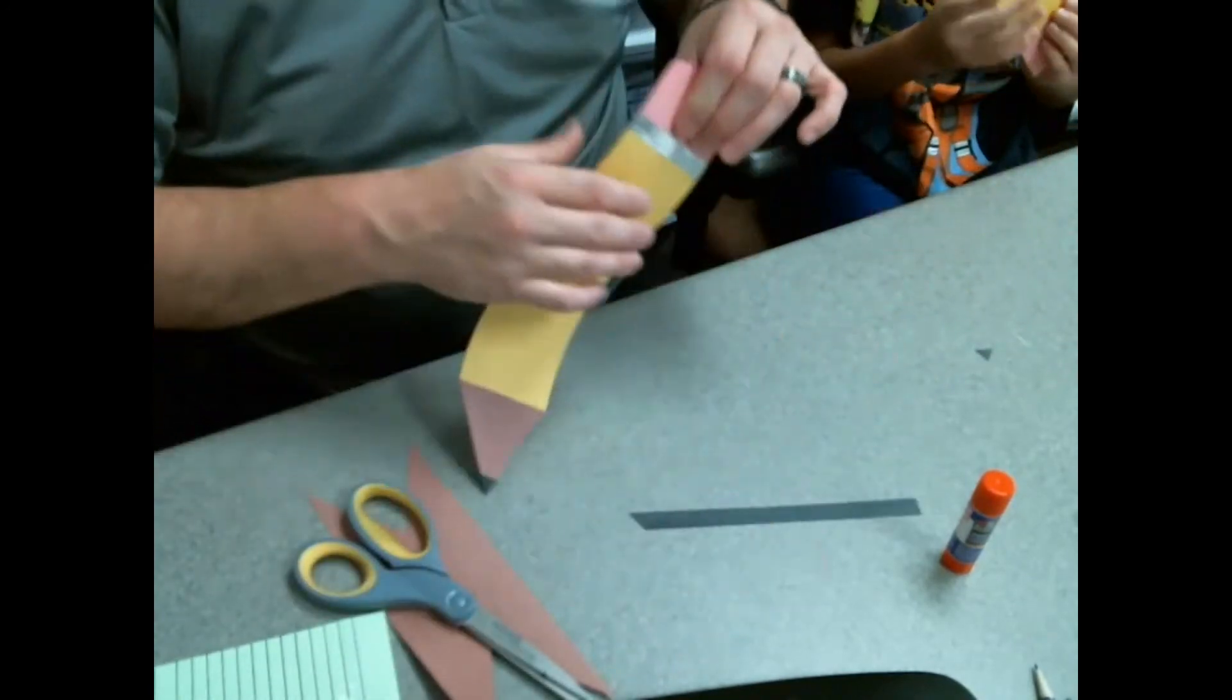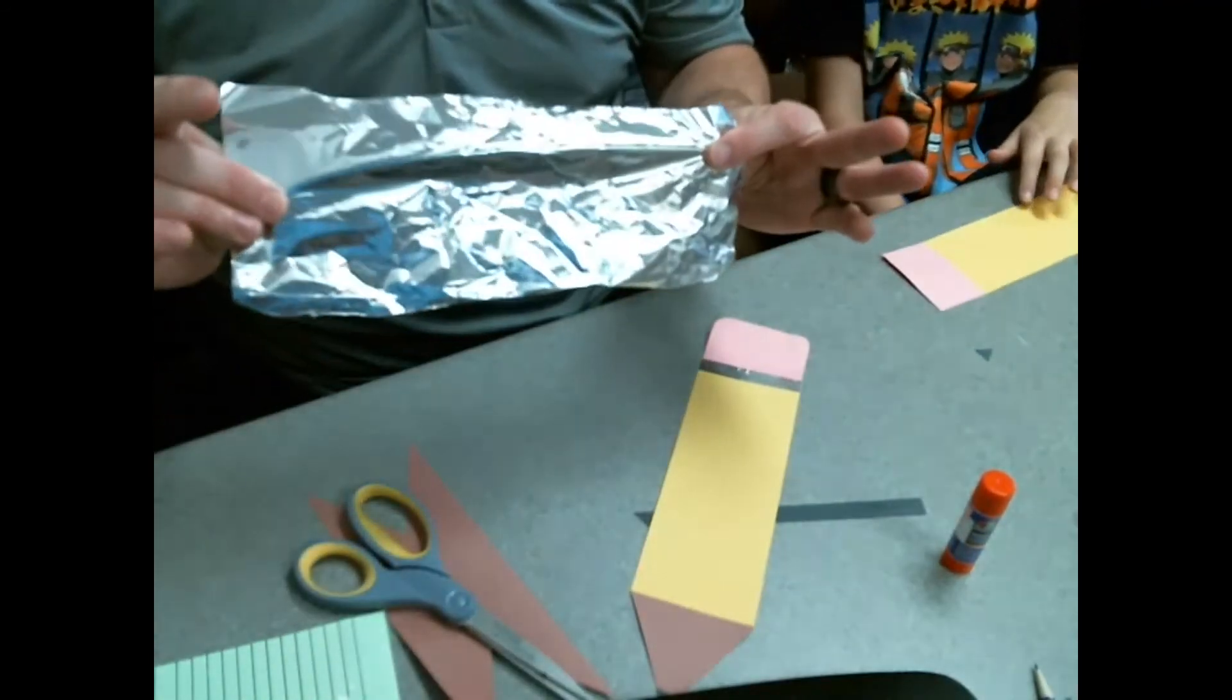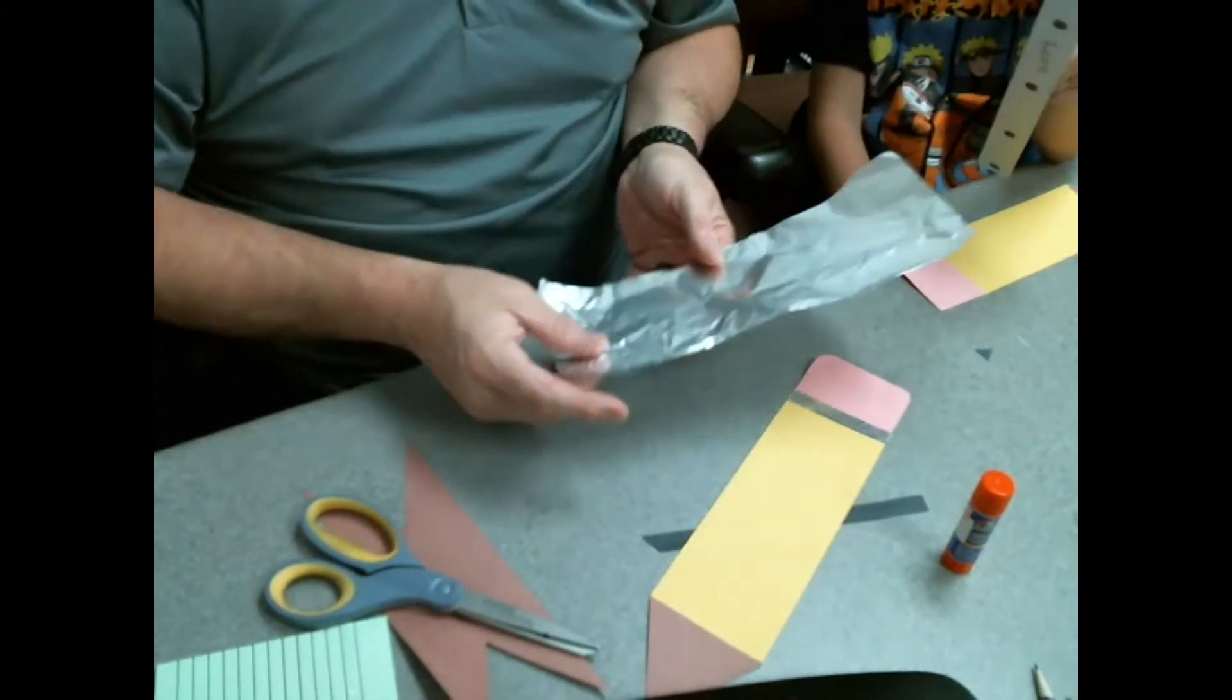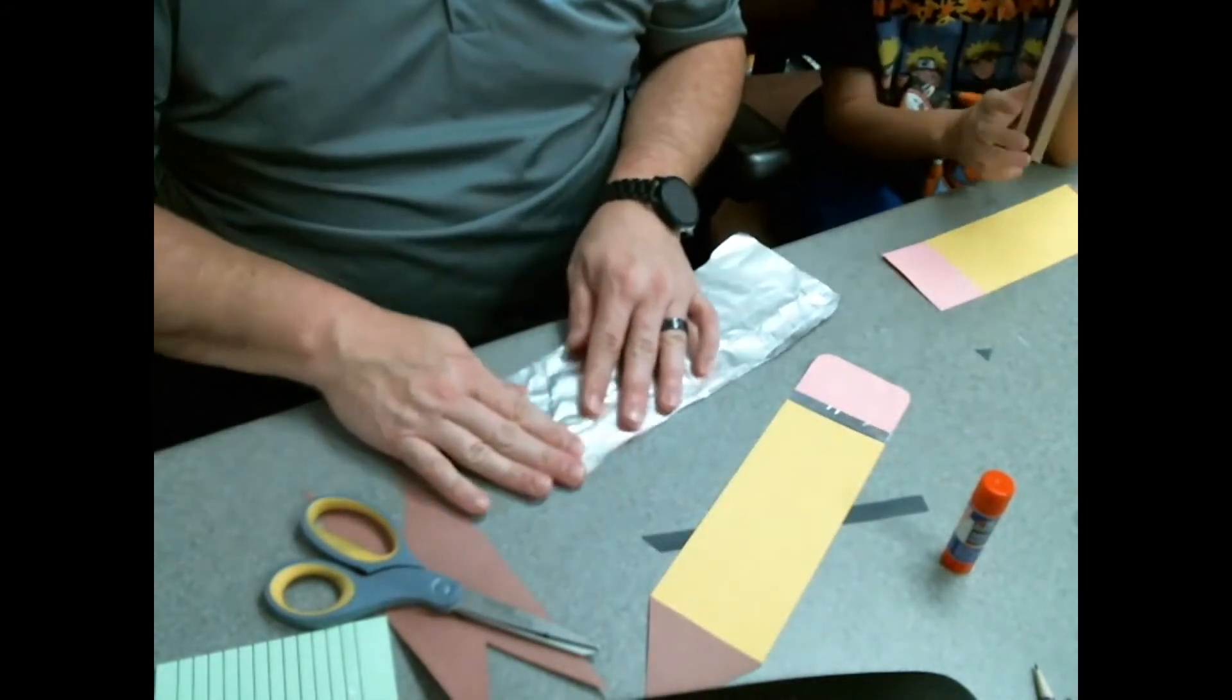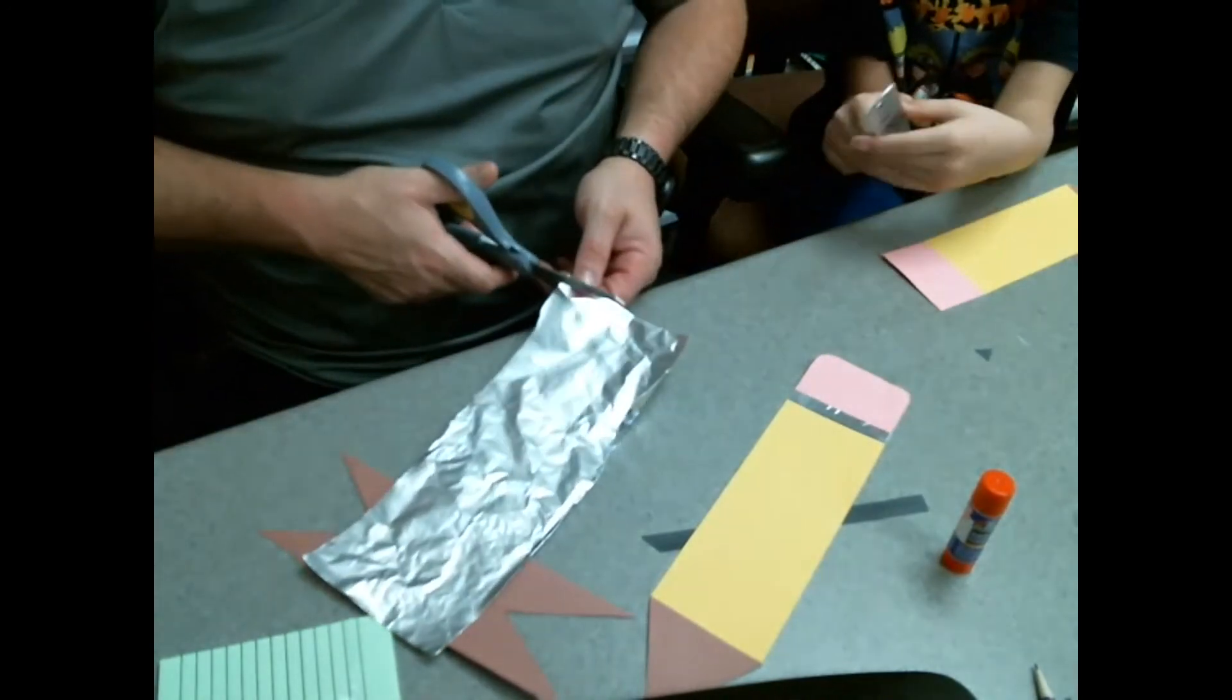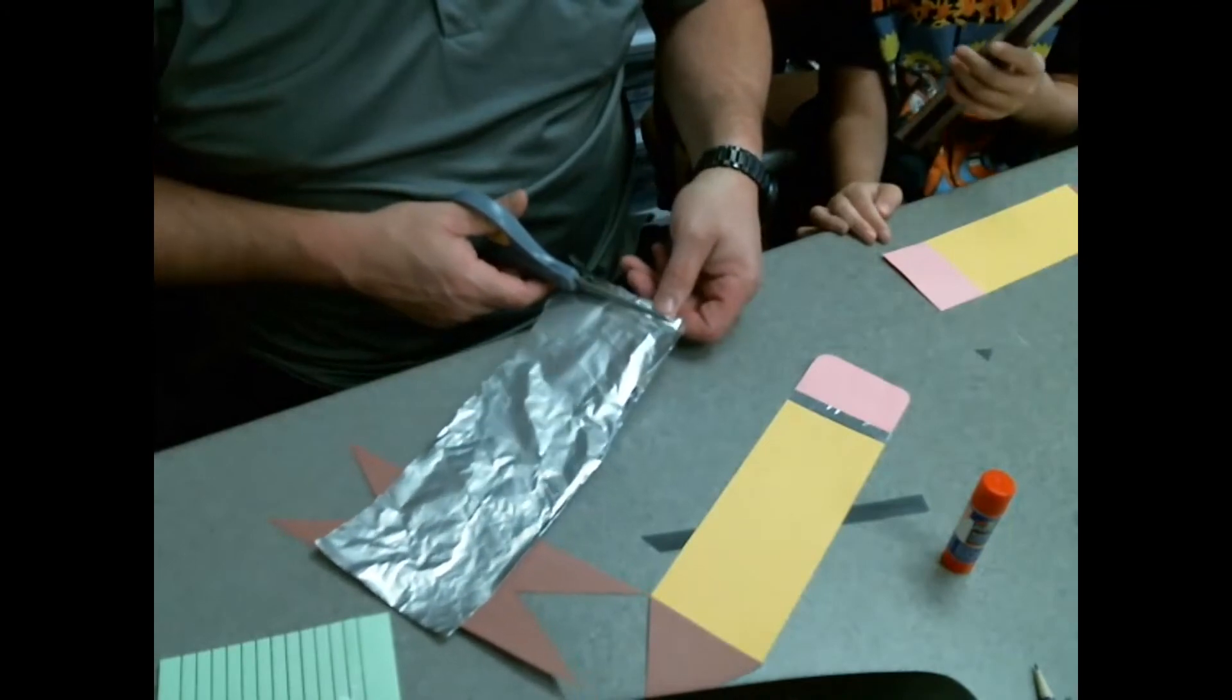Now I have this nice shiny piece on here, so you're gonna use some aluminum foil. You're going to cut it about a half an inch. You can measure it out if you want, or you can just eyeball it like I'm doing.